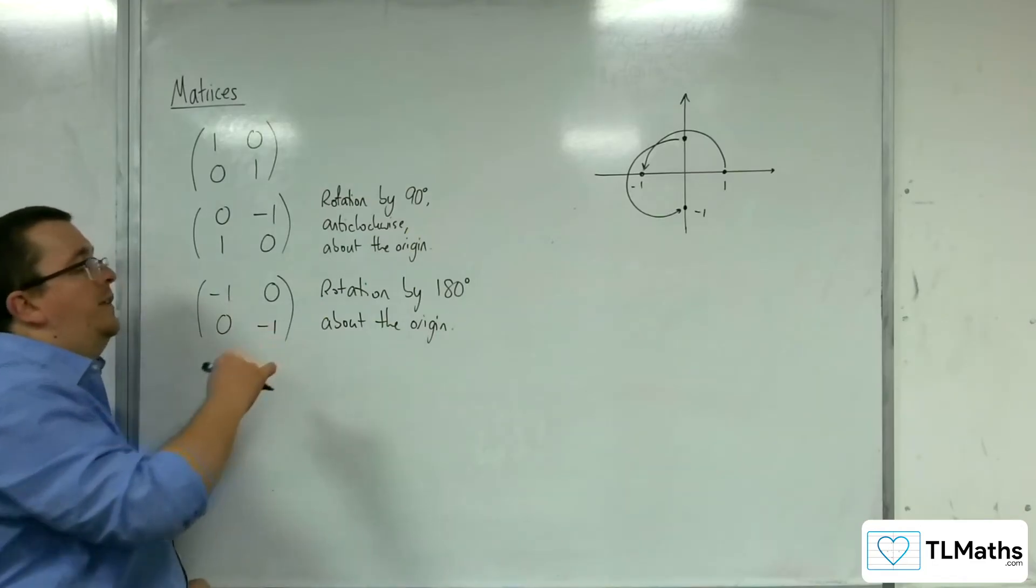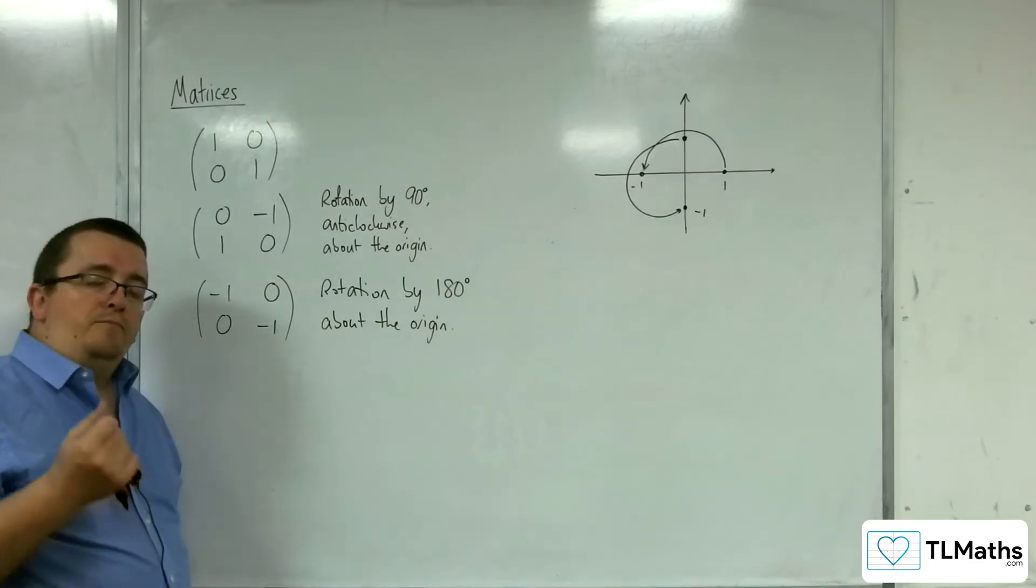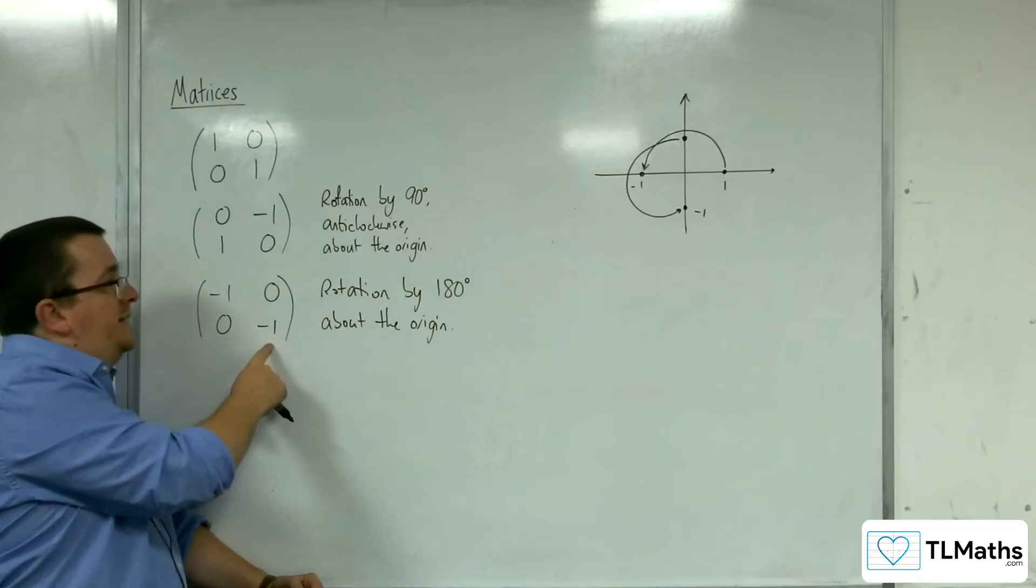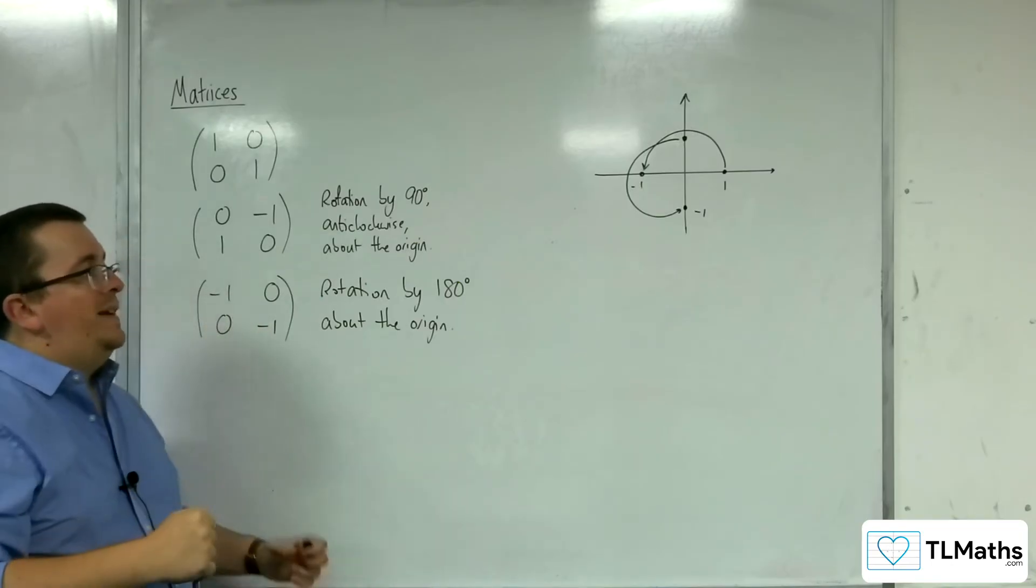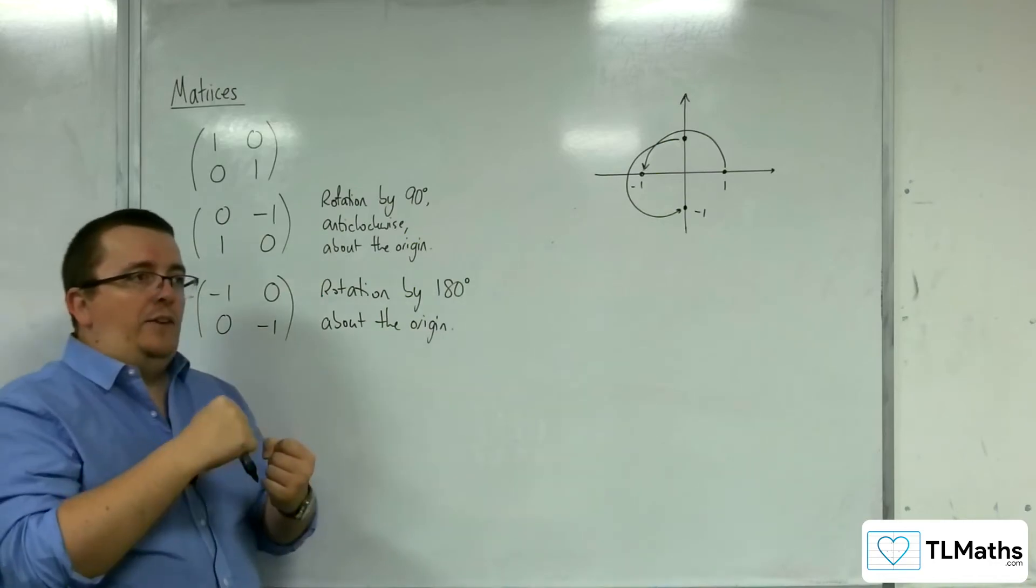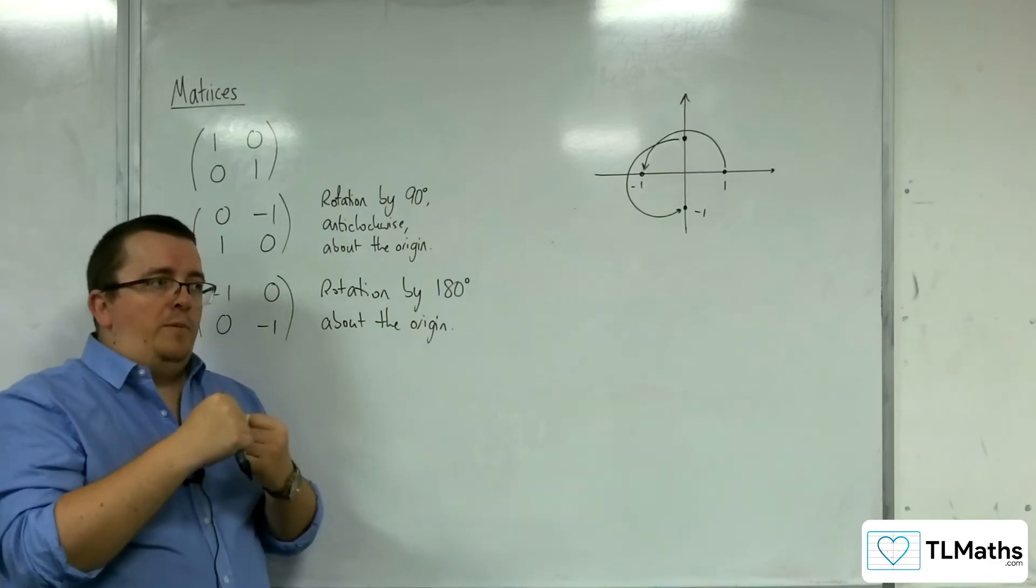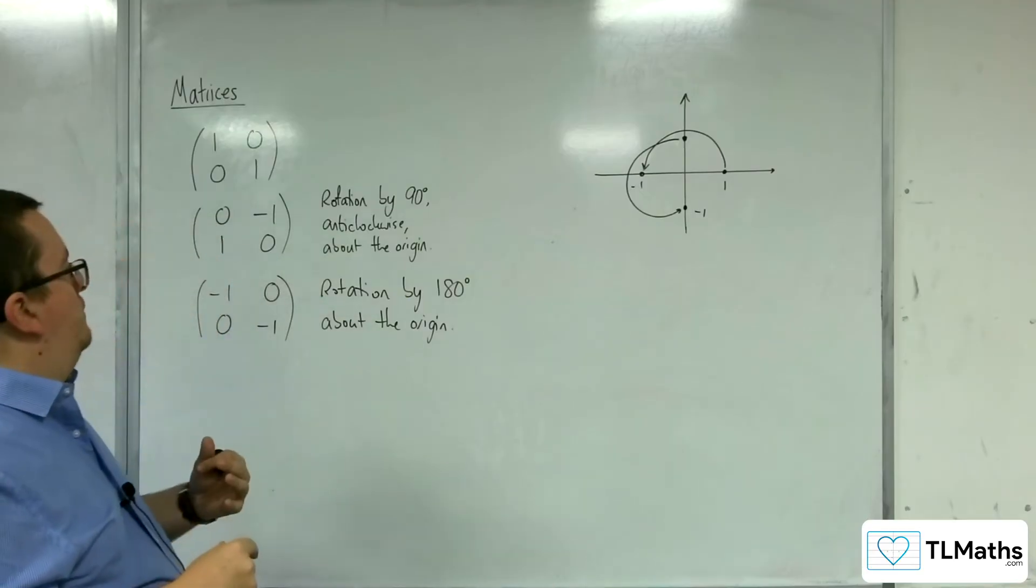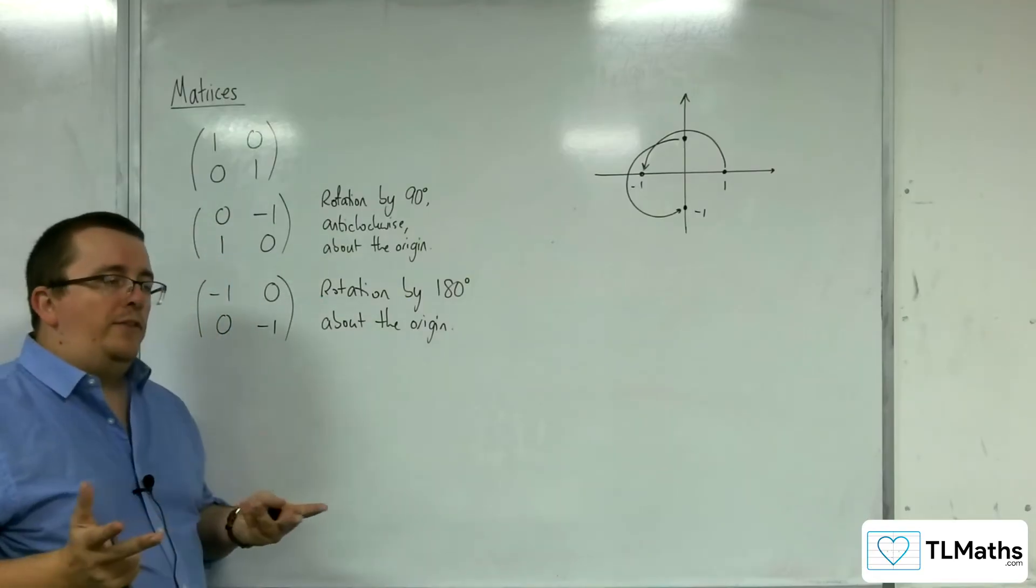You might notice that it looks like the enlargement matrix, except these both numbers are, of course, negative 1. And so what's happening is that the shape is being enlarged, but back through the origin.